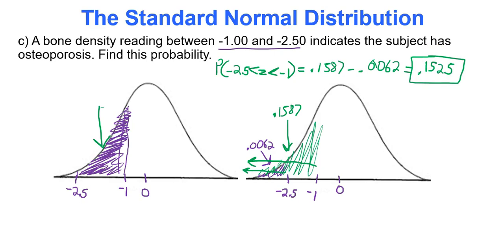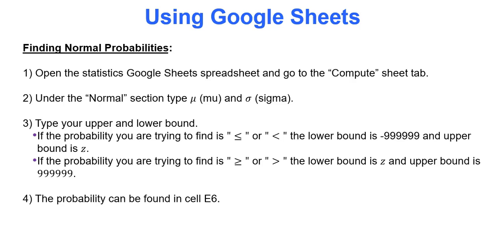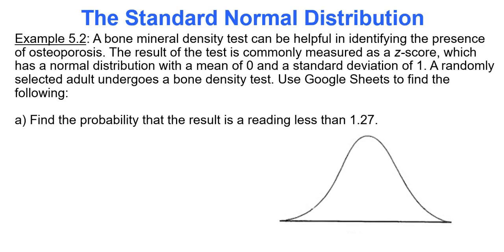Using a table gets more confusing depending on the type of probability, and it's not even the most accurate — it's how things used to be done. We need to introduce some technology. I'm going to walk you through using Google Sheets. Let's do the same situation and find the probability a result is less than 1.27.